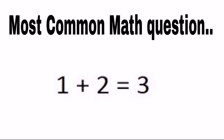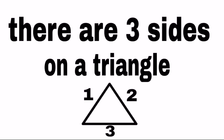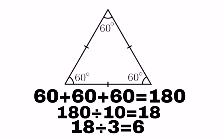The most common math question. 1 plus 2 equals 3. There are 3 sides on the triangle. 1, 2, 3. 60 plus 60 plus 60 equals 180. 180 divided by 10 equals 18. 18 divided by 3 equals 6.